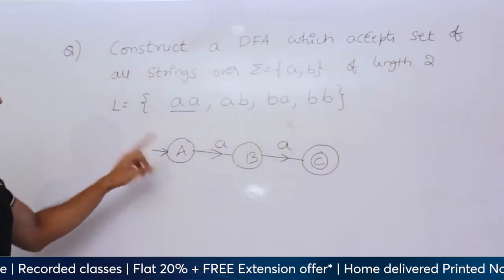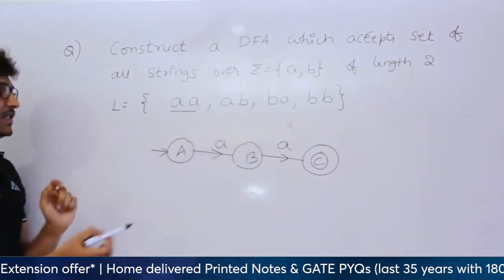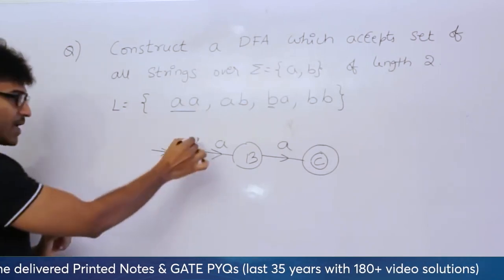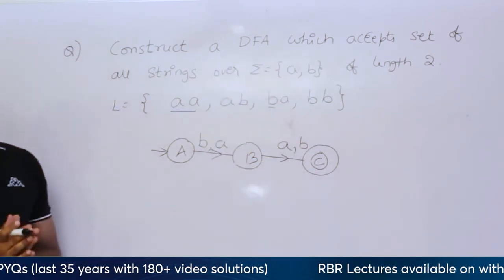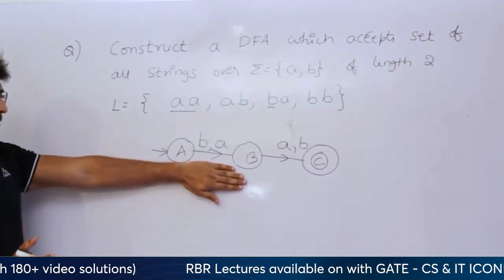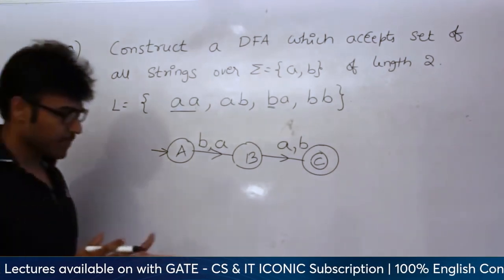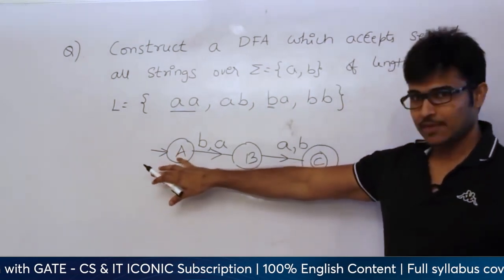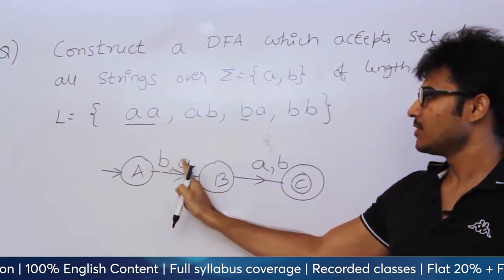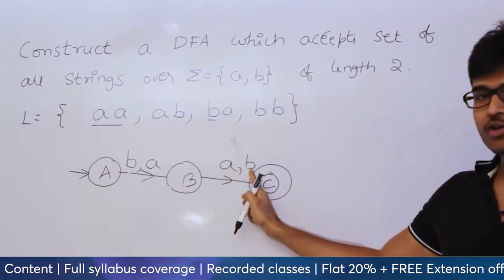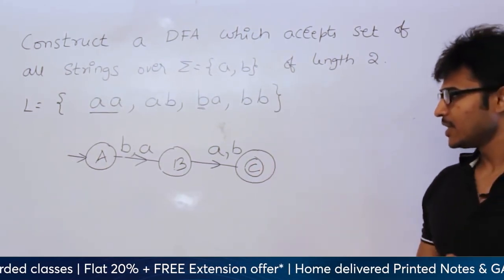Therefore add one more transition on 'b'. If I see small 'b' initially in capital A, I still need to accept it. And capital B on looking at A or B goes to capital C. But what about capital C? We didn't give any transition for C. We reach capital C by seeing any string of length 2 — AA, AB, BA, or BB. If we are in C and see one more symbol, the string has length 3, which is not in the language.